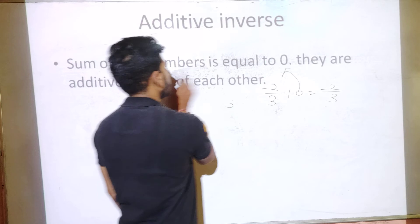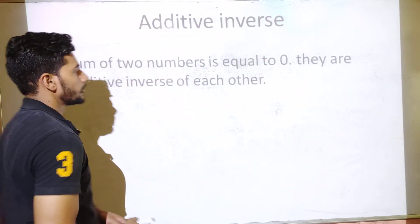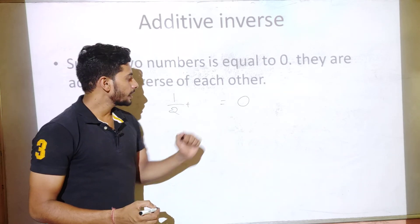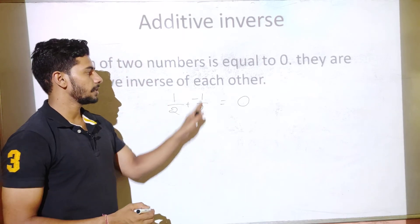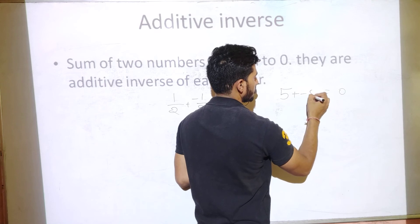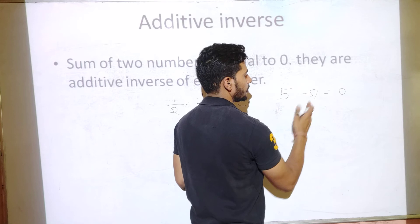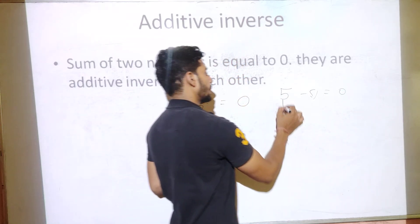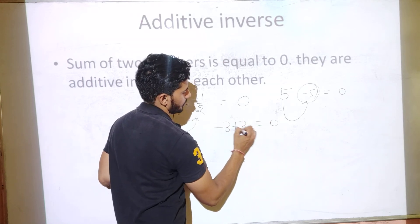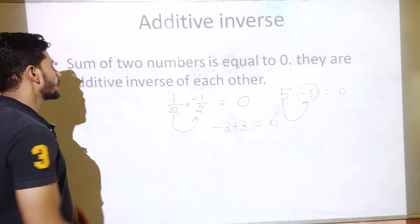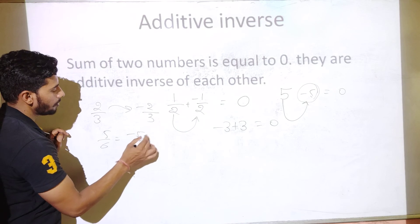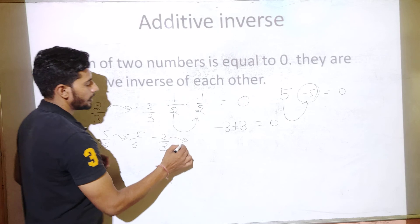Next let's talk about Additive Inverse. For any rational number like 1/2, what do we add so that we get the additive identity, i.e., 0? We add minus 1/2, because they have opposite signs and cancel to give 0. For example, 5 + (minus 5) = 0, so the additive inverse of 5 is minus 5. The additive inverse of 1/2 is minus 1/2. For minus 3, we add plus 3 to get 0. So for 2/3 the additive inverse is minus 2/3; for 5/6 it is minus 5/6; and for minus 2/3 the additive inverse is 2/3.